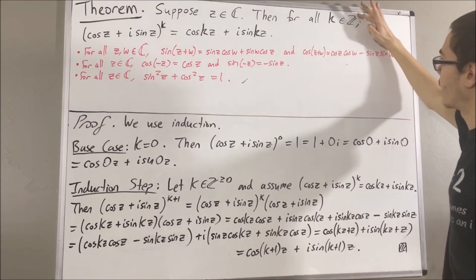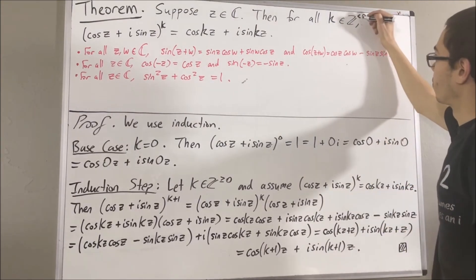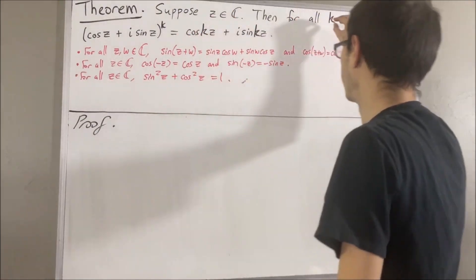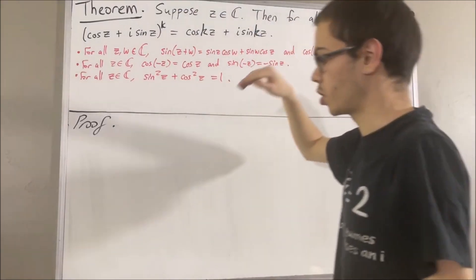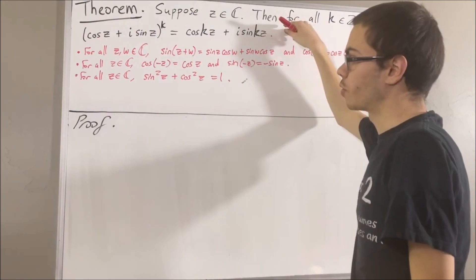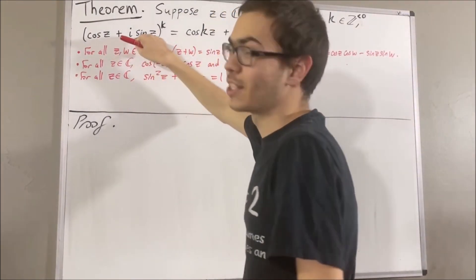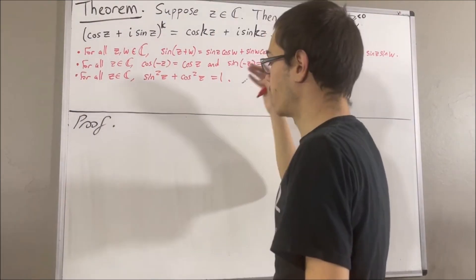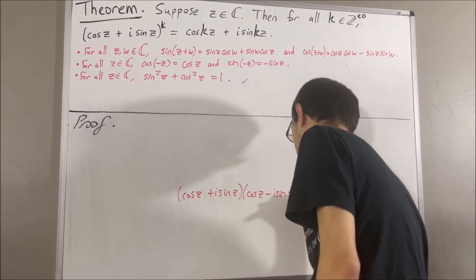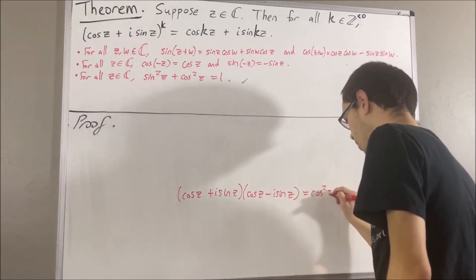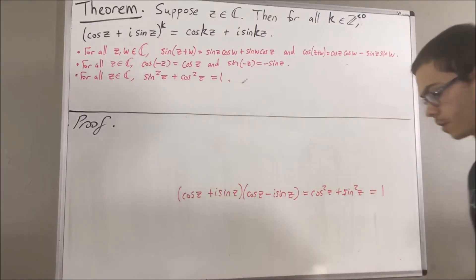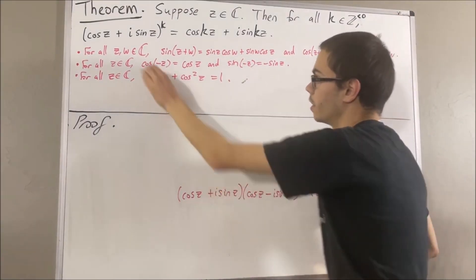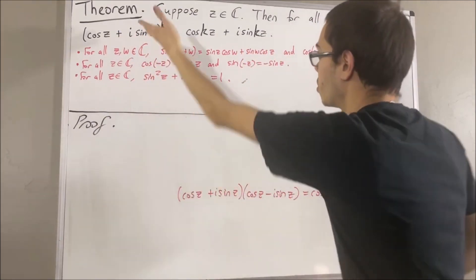Now, we're going to consider the case where k is an integer less than 0. So, we're going to prove De Moivre's theorem for negative integers now. Before we get into the proof that this is true for negative integers, let's first ask ourselves if the proposition makes sense. The reason why we're asking this is because we can only raise non-zero numbers to the power of a negative integer. How do we know that cosine z plus i sine z is non-zero? Well, because if we multiply these together, we get cosine squared z plus sine squared z, which is equal to 1. So, the product of both of these is equal to 1, which means neither of them could be 0. So, this is non-zero and we're allowed to raise it to the power of a negative integer. The proposition makes sense.